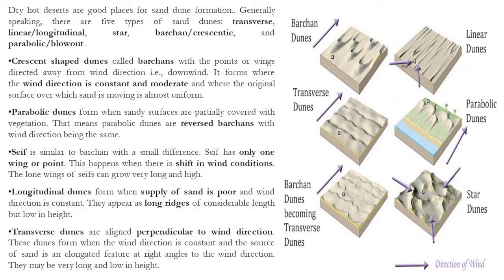There are also star dunes. Star dunes are formed when the wind direction constantly shifts after a season or period of time. These dunes are formed in a star shape, creating a mound of sand. They are called star dunes.